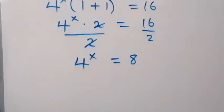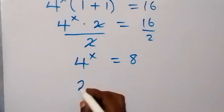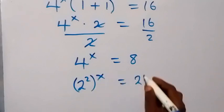Then from this we can change both sides to base 2. This will be 2 raised to 2, then raised to x, and here this is 2 raised to 3.